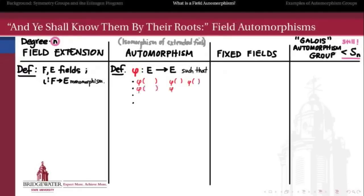There are four properties. The first two concern the arithmetic structure of the field: phi has to preserve addition, so phi(a + b) = phi(a) + phi(b), and it has to preserve multiplication, so phi(a · b) = phi(a) · phi(b). Taken together, those two make phi a homomorphism of fields. But we need more: we want phi to be invertible, because we'd like automorphisms to form a group where every element has an inverse.